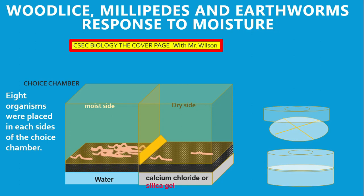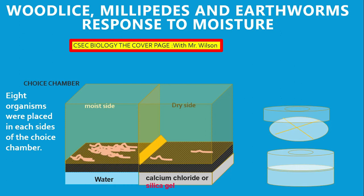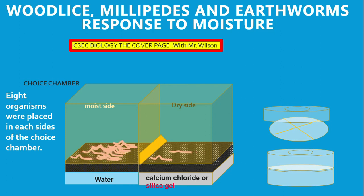It's going to be a little difficult probably for some students to count the number of organisms, but it's very important that you count them. Don't rely on what's written to the side. Eight organisms were used — count the organisms in the choice chamber so that you can be accurate. Your teacher will be looking at the diagram, so you really don't want to get it wrong. It is very important for you to explain why the organisms responded the way they did.